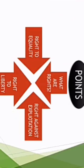These are the important points that we are going to learn from the chapter. First, we will be learning what are the rights, or what is the meaning of rights. After that, we will be learning three important rights: right to equality, right to liberty, and right against exploitation.